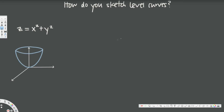Level curves in a 3D graph are found by intersecting with the XY plane. So whenever they ask for level curves of a multivariable function, we are working with the XY plane. For example, if you want to draw a level curve — a level plane — for this 3D graph, you draw a plane that is parallel to one of the axes.